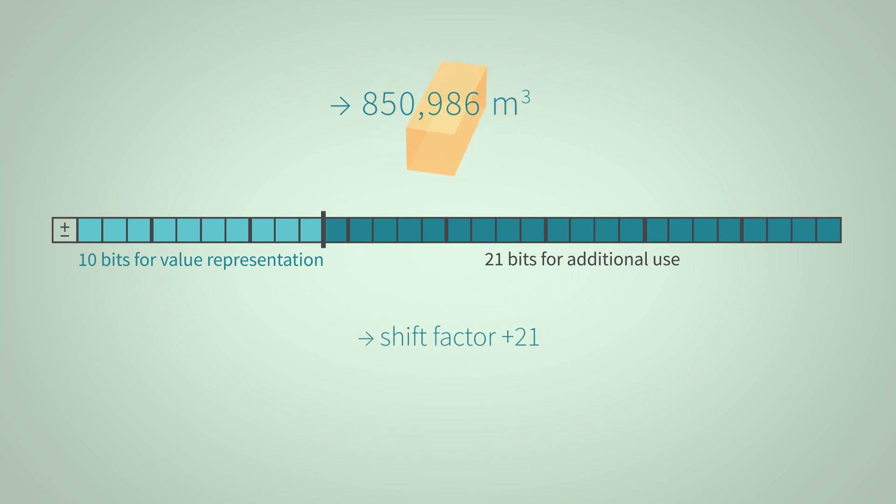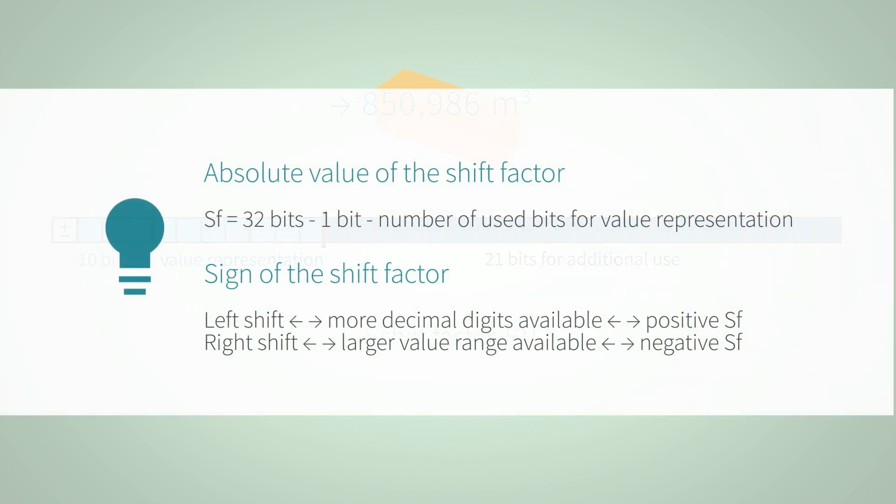The shift factor is calculated in two steps. First the amount: since the value is represented in a 32-bit mantissa, this is our starting point and we calculate, 32 bits minus 1 bit for the sign minus the number of bits used for the value representation. This results in the number of unused bits and at the same time the amount of the associated shift factor.